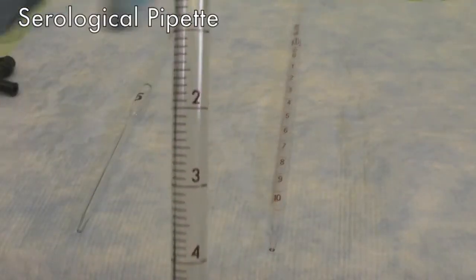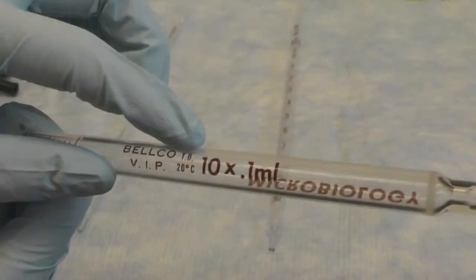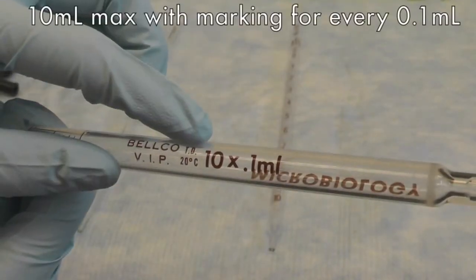Serological pipette is graduated to dispense different volumes. The number at the top of the pipette shows the maximum volume that can be accurately transferred by the pipette. For instance, this pipette can transfer a maximum of 10 milliliters, with accuracy up to 0.1 milliliters.